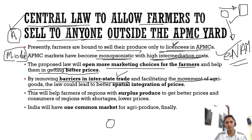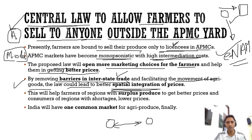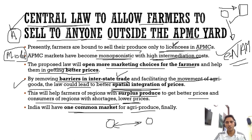Generally it happens that prices for the same commodity — for example onion — vary greatly between regions due to supply and demand differences. Once this bill is enacted there will be better spatial integration of prices, making them more or less equal across regions. This will benefit all stakeholders: farmers in surplus regions will get better prices, and consumers in deficit regions will get lower prices. India will finally have one common market for agri-produce.